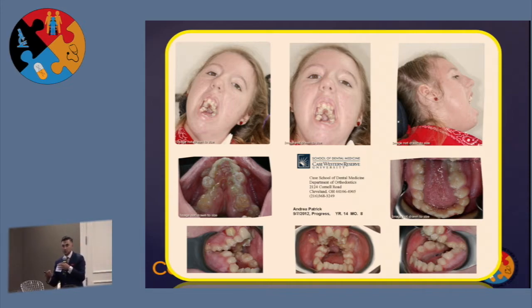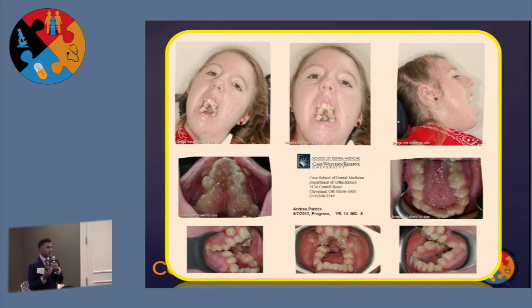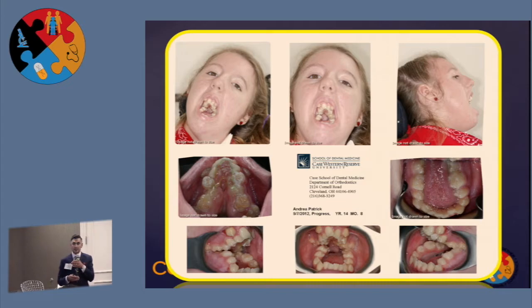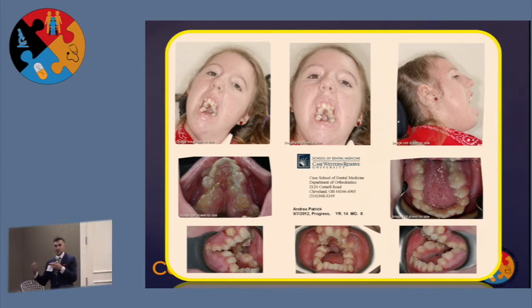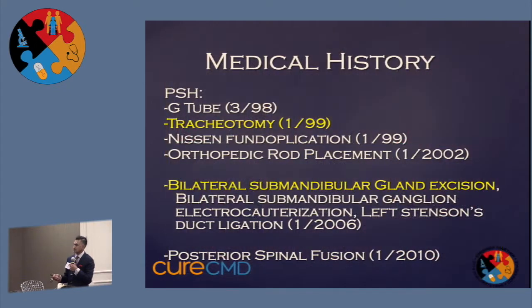I do lots of jaw surgeries for patients who don't have syndromes or craniofacial problems — everyday patients with underbites, overbites, just genetic predispositions from family genetics, but without any other abnormalities of speech or hearing. They have to go through the same process. Using our knowledge base and experience taking care of normal patients, we then applied that to Andrea's case.